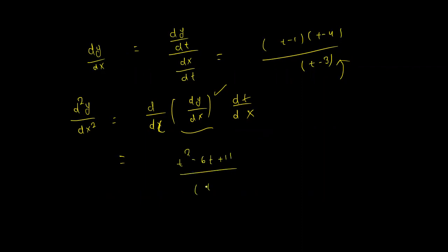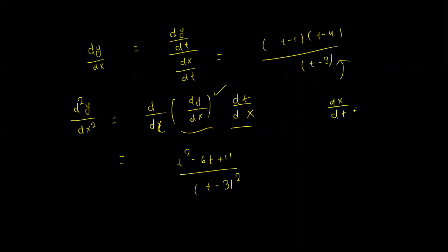After applying the quotient rule for the second derivative, I use dx/dt. At the beginning, I had dx/dt equal to 6(t - 3), so I will substitute that here.